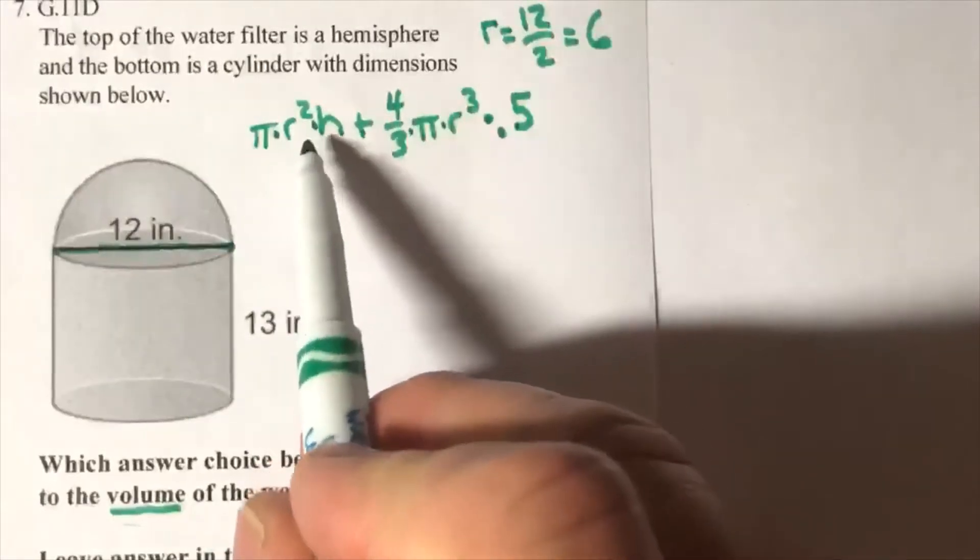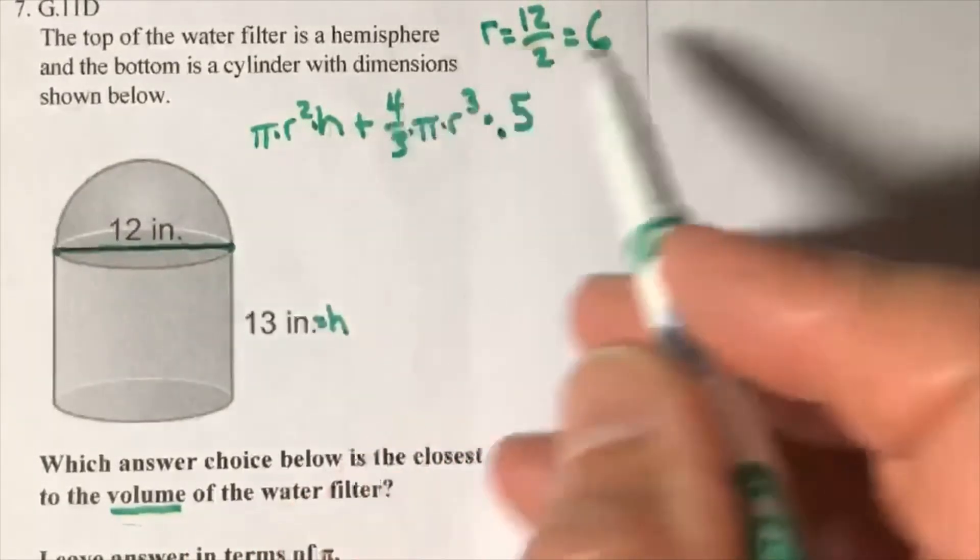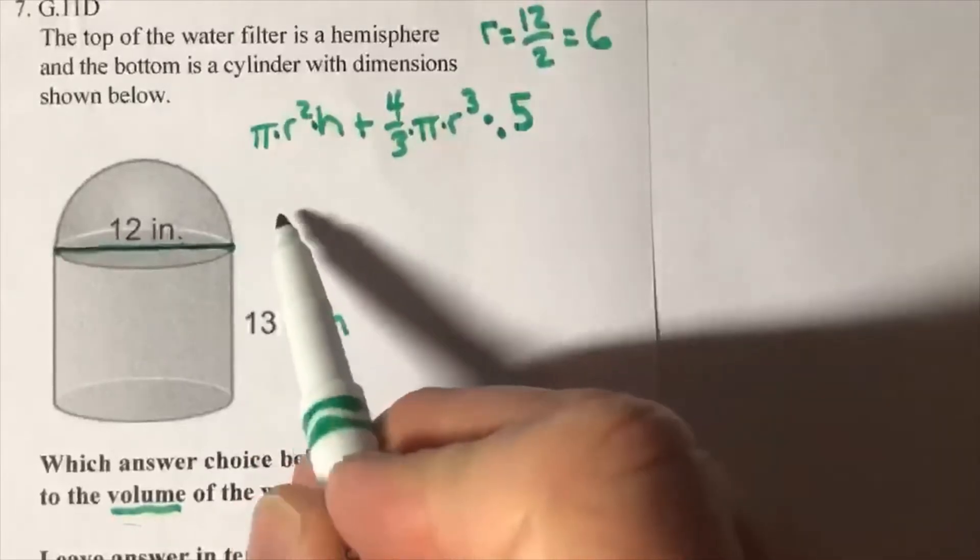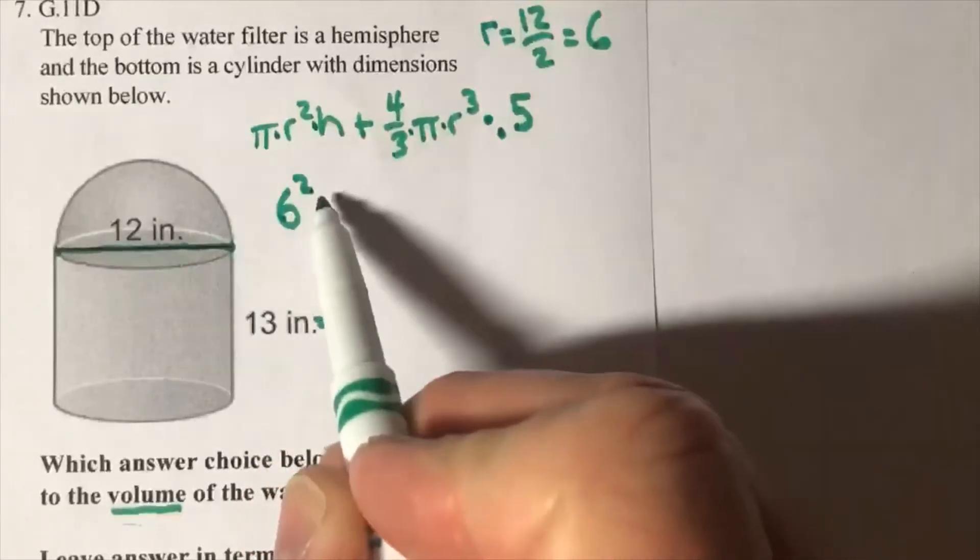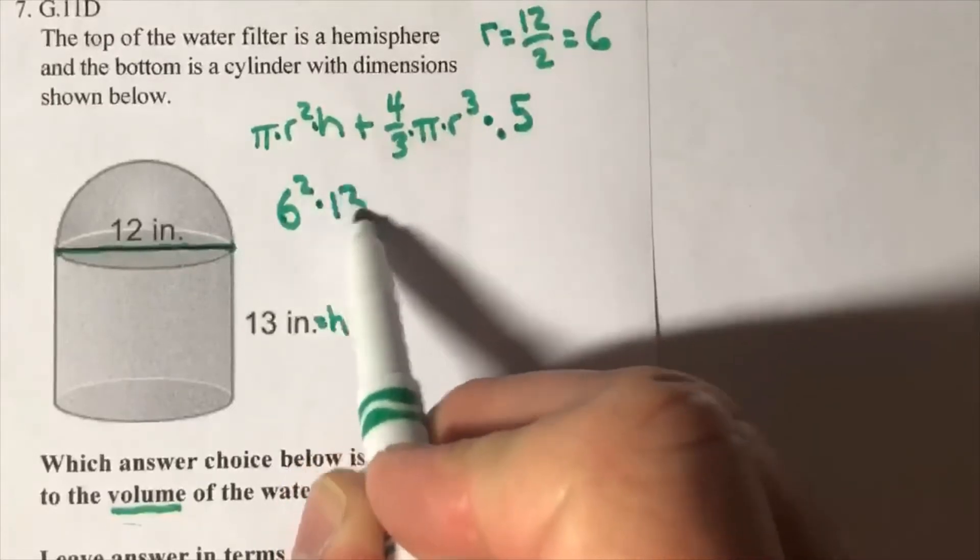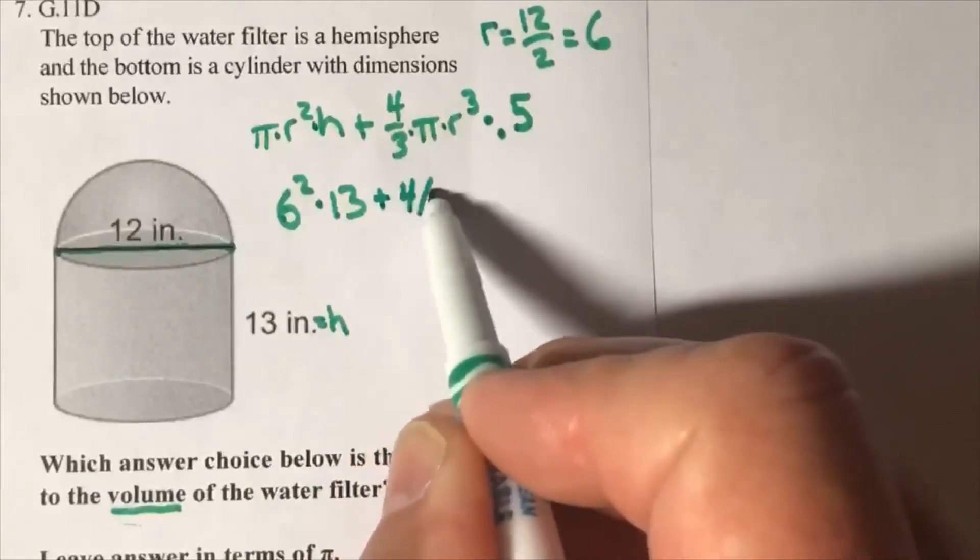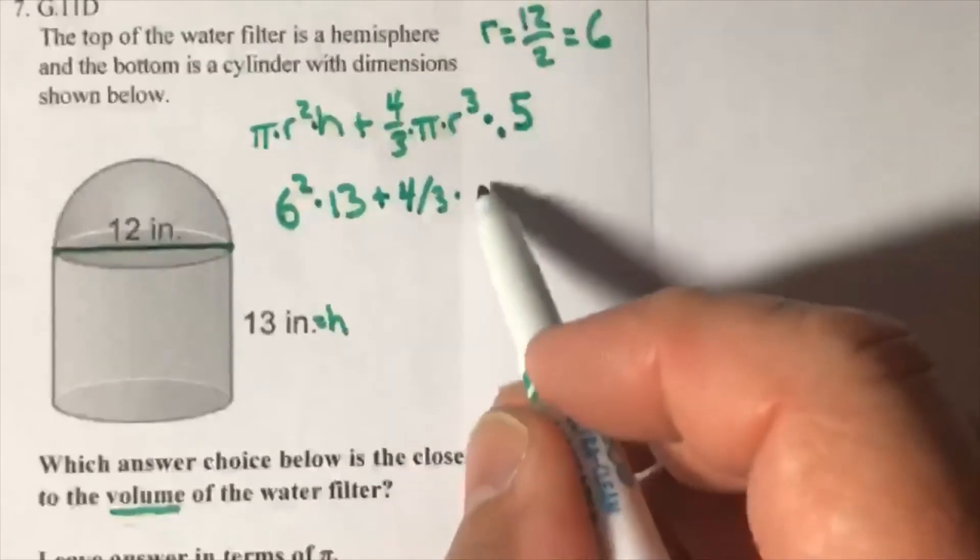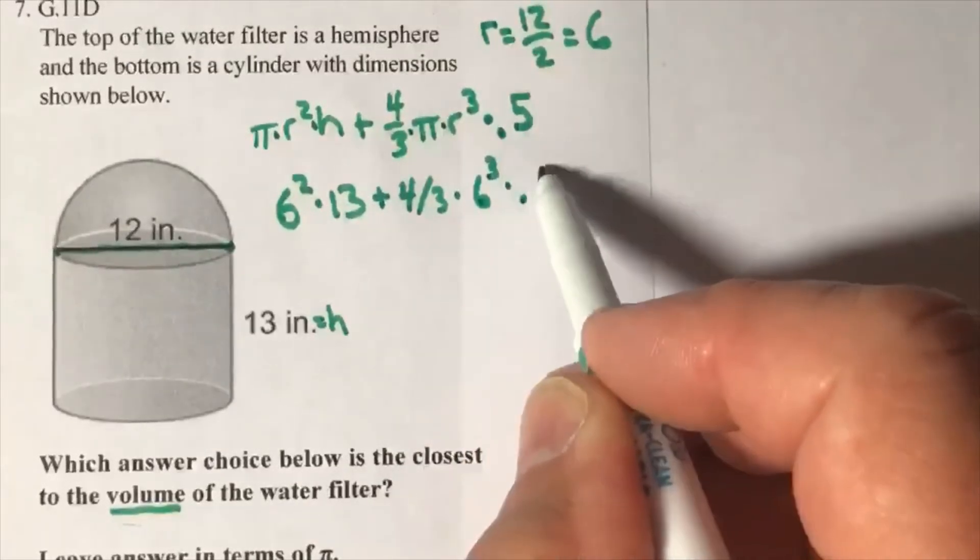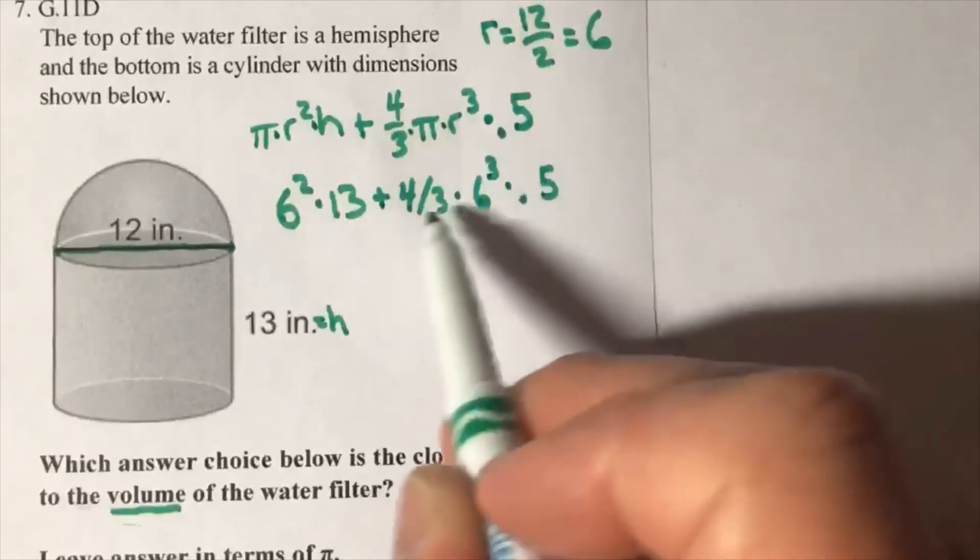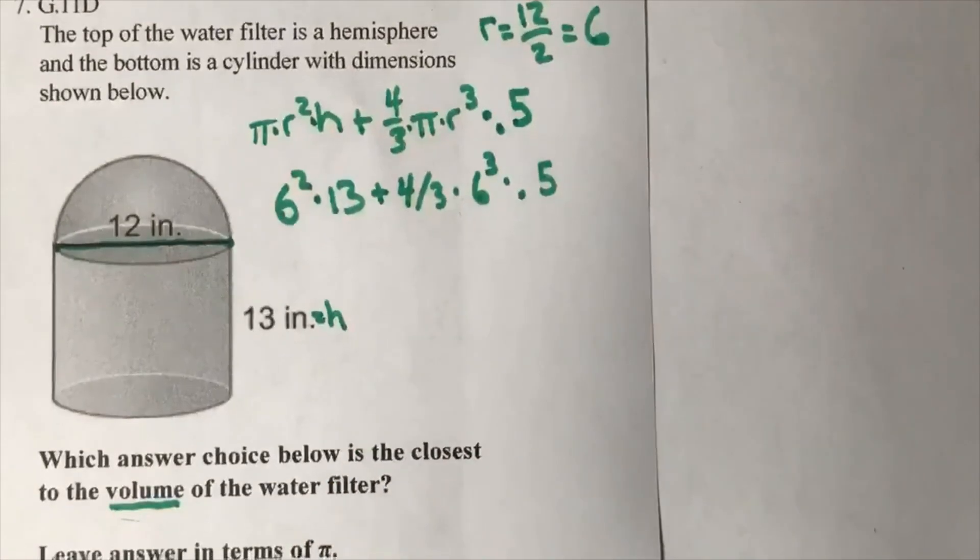Replace - we can replace the radius at the same time. So r² here would be 6², 6² times 13 plus 4/3 times 6³ times 0.5. That's it, finish this problem.